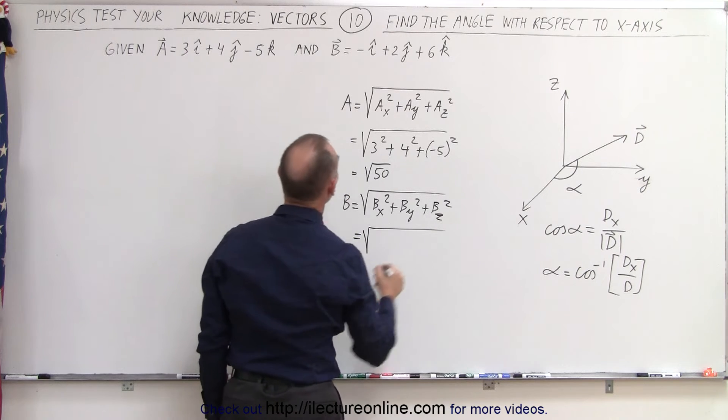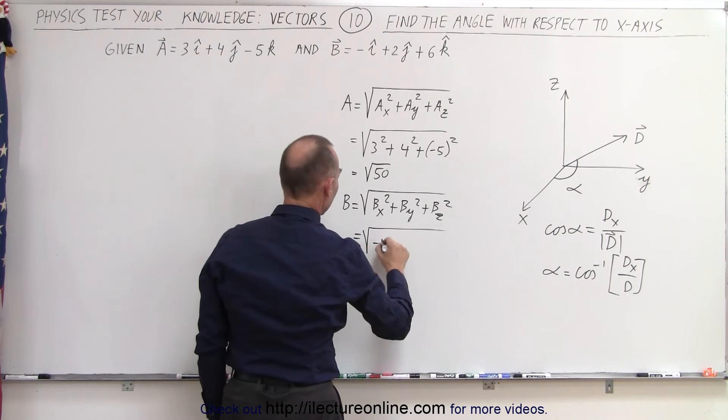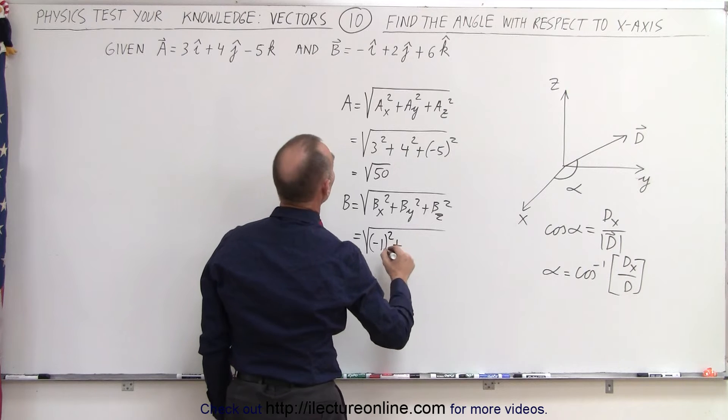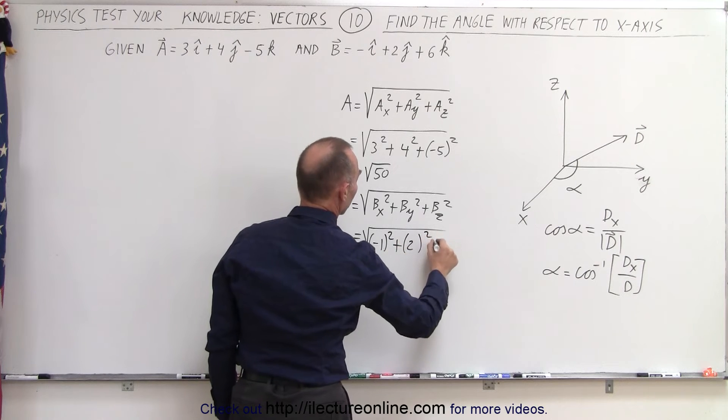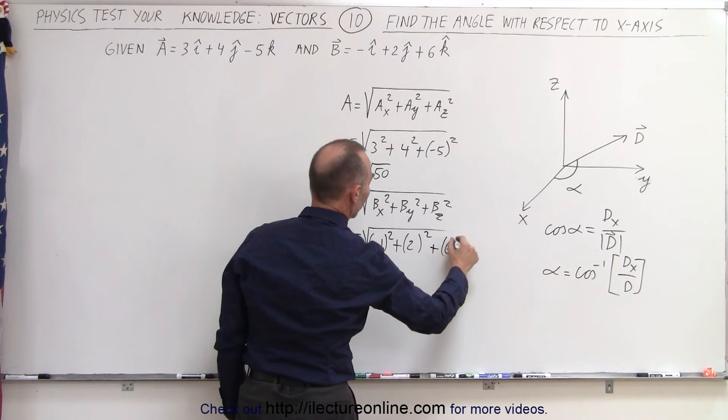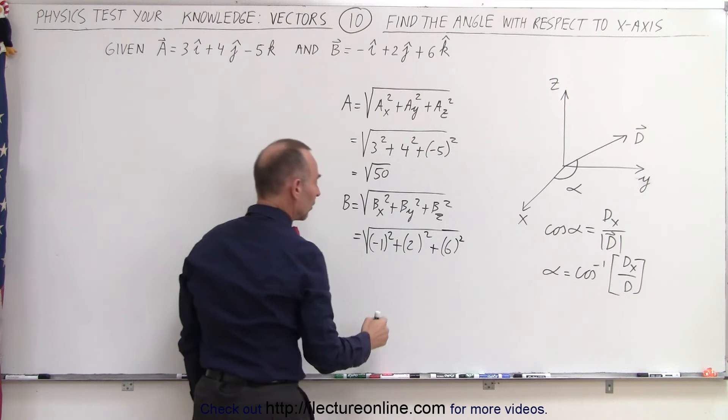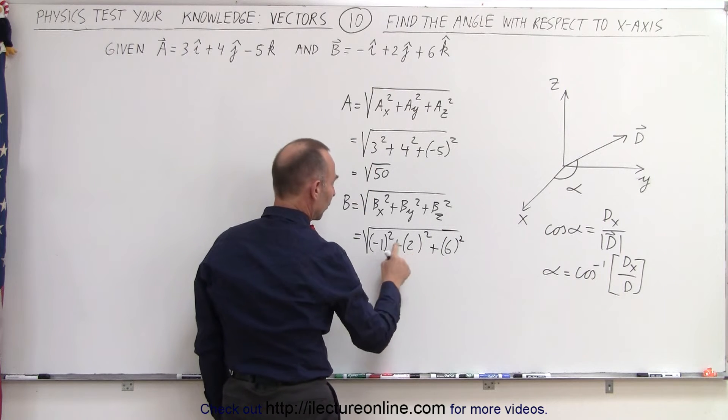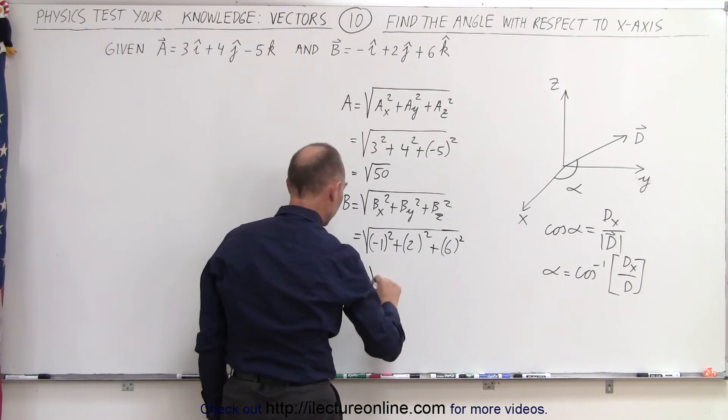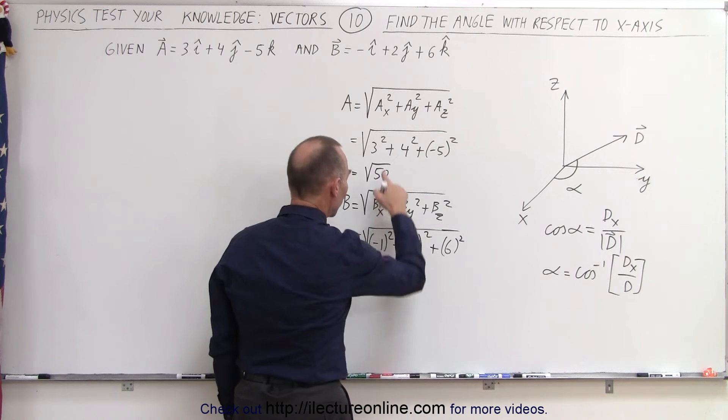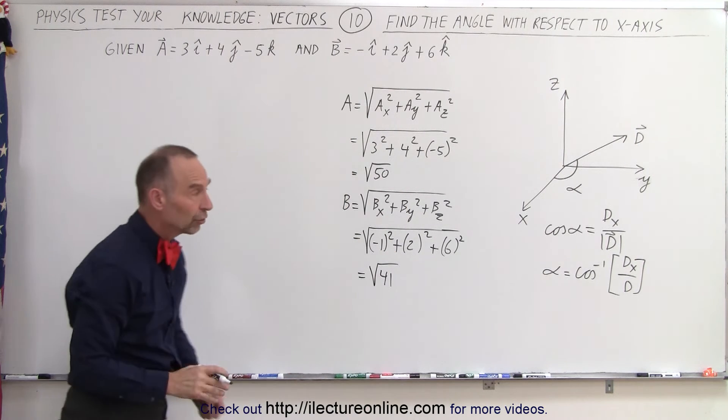And so this becomes equal to negative 1 squared plus 2 squared plus 6 squared. And so that's 36 plus 4 that's 40 plus 1 that's 41, equal to the square root of 41. So now we have the magnitudes of our two vectors.